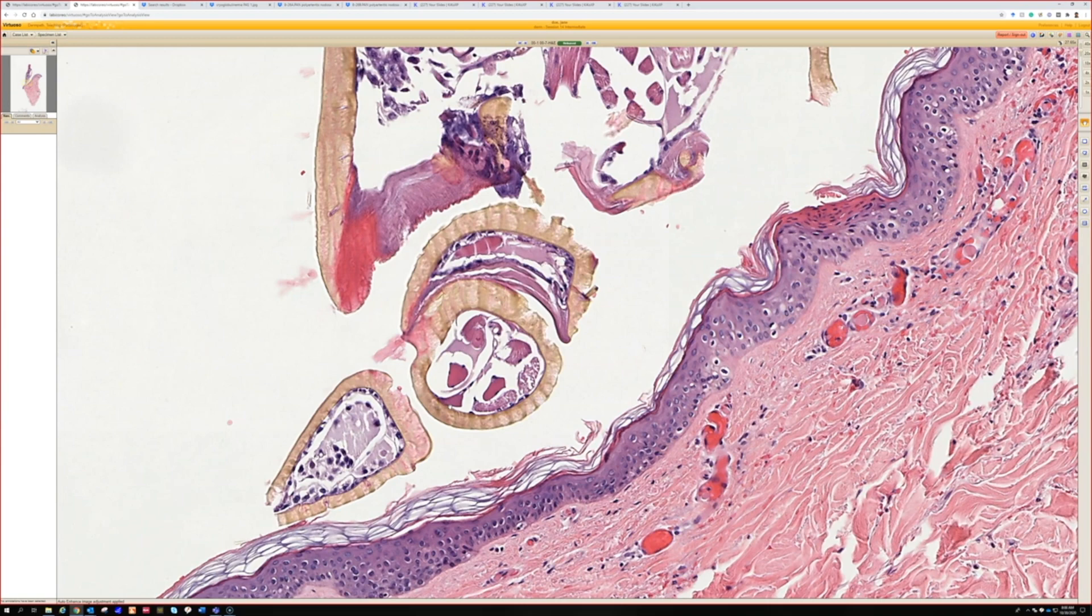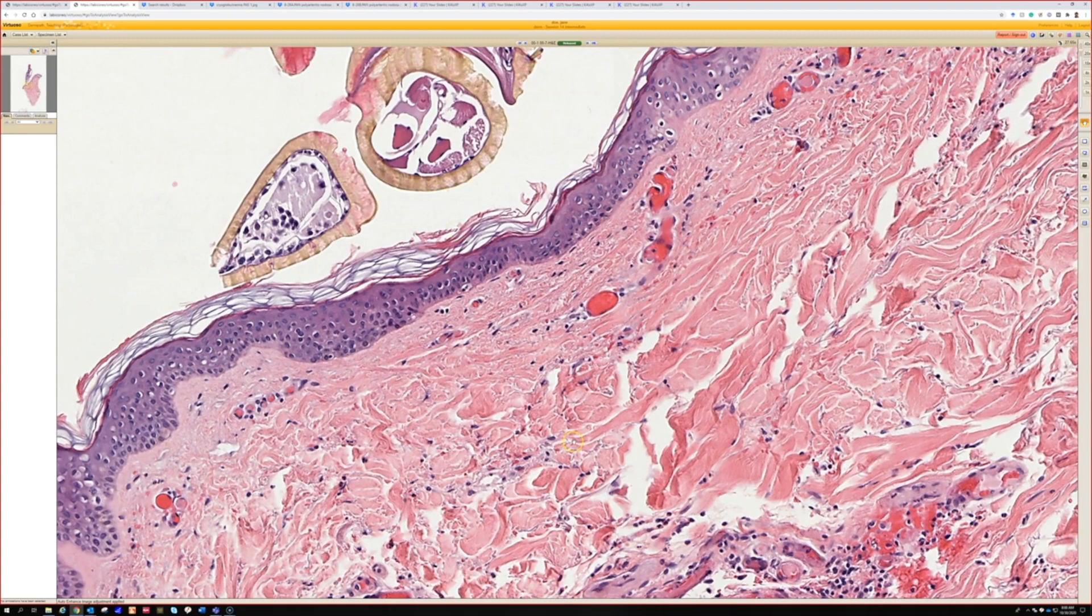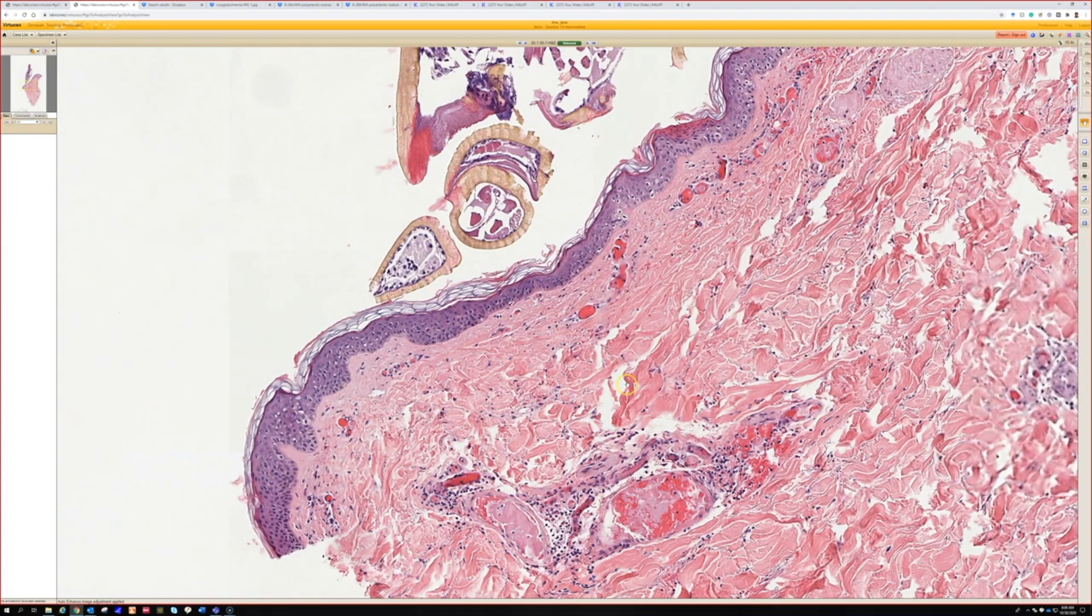And then here's the tick mouth part. A lot of times what we see on a punch of retained tick mouth parts, we see arthropod bite reaction changes and just a little fragment or cross section of one of these embedded down in the dermis. So anytime I see this yellow chitin stuff in the dermis, probably a tick mouth part.